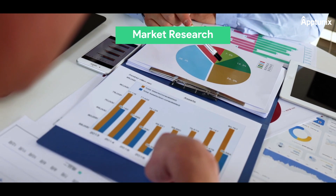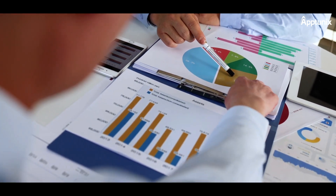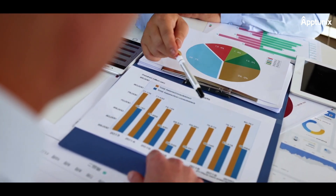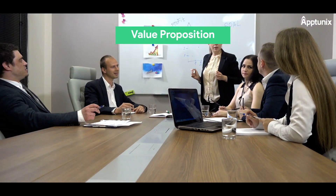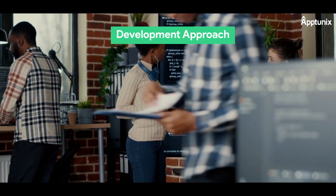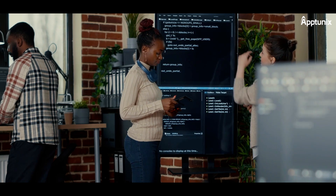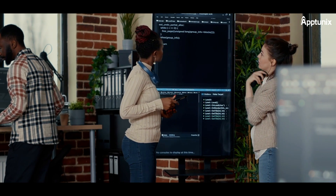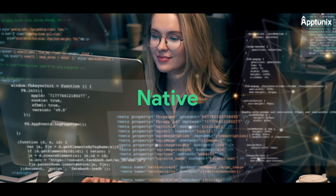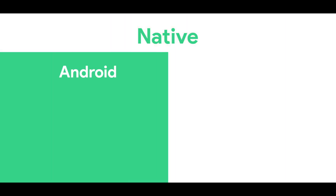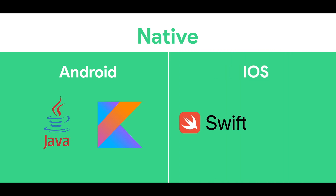Here's the process of developing a ride-sharing app. Market Research: analyze market trends, competitors, and target audience to identify gaps and unique features. Value Proposition: brainstorm and analyze to create a niche or unique feature for your app. Development Approach: choose between native, cross-platform, or hybrid development based on your needs and budget. Native development offers a higher cost but rich user experience, using Java and Kotlin for Android, and Swift and Objective-C for iOS.